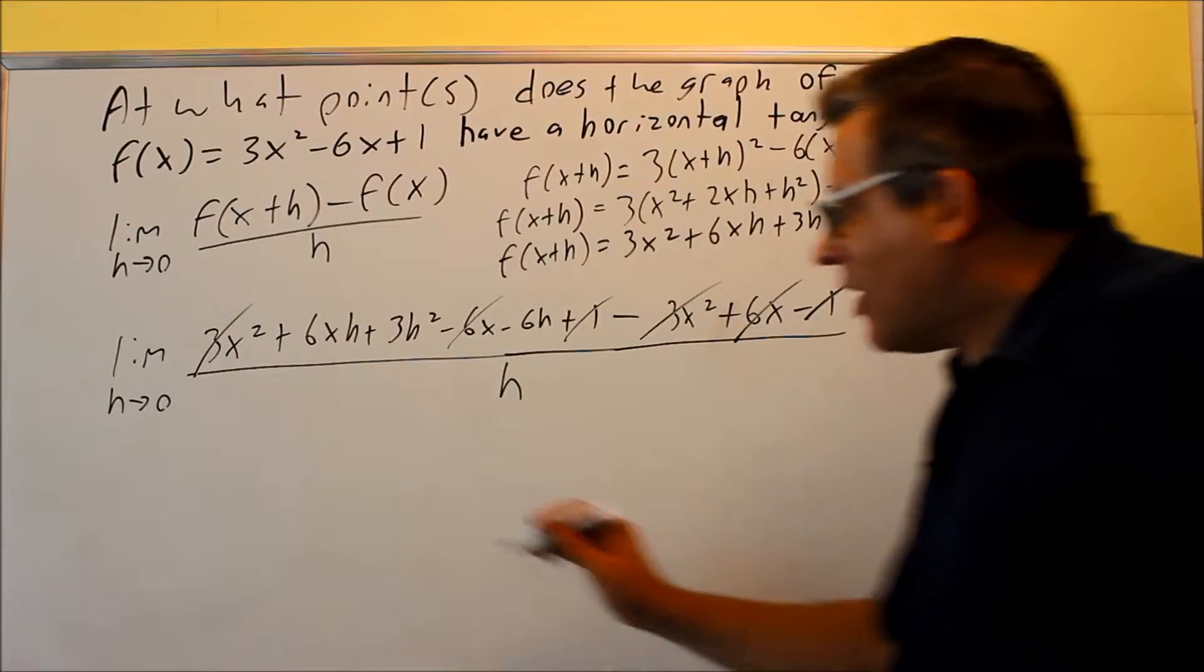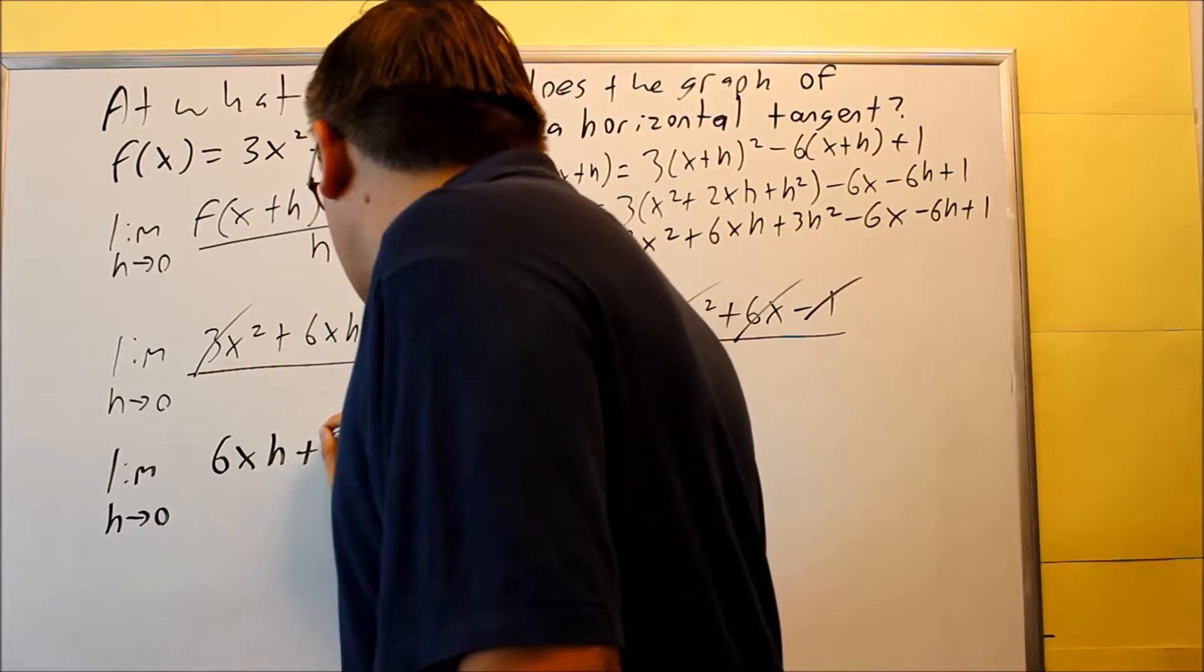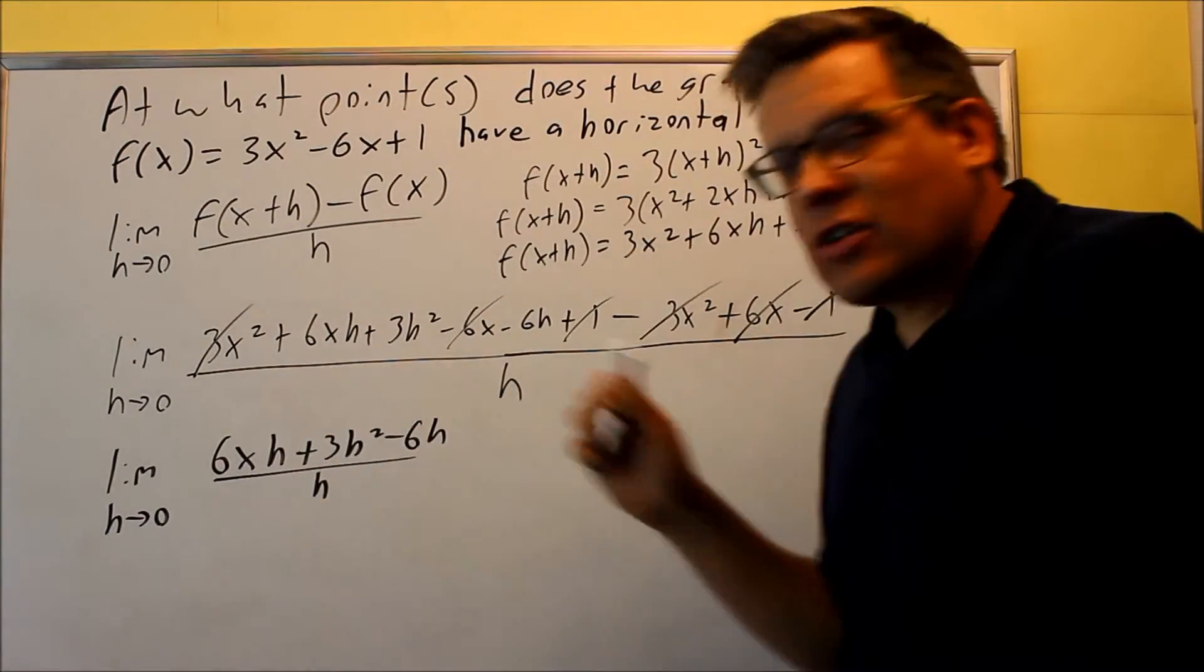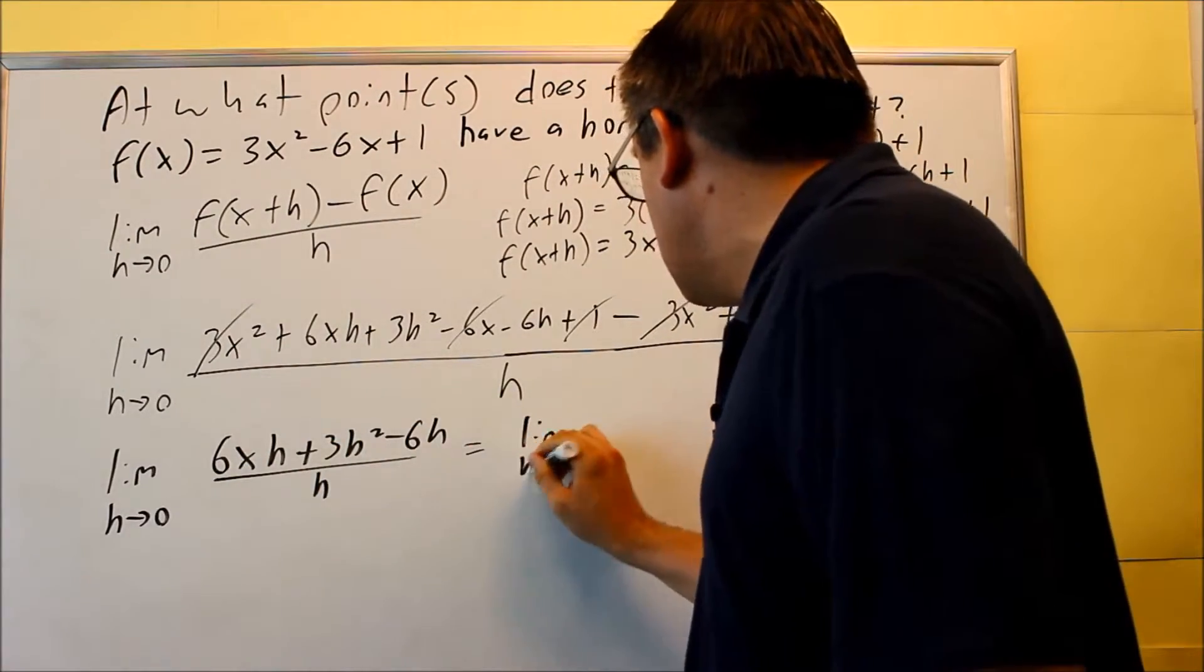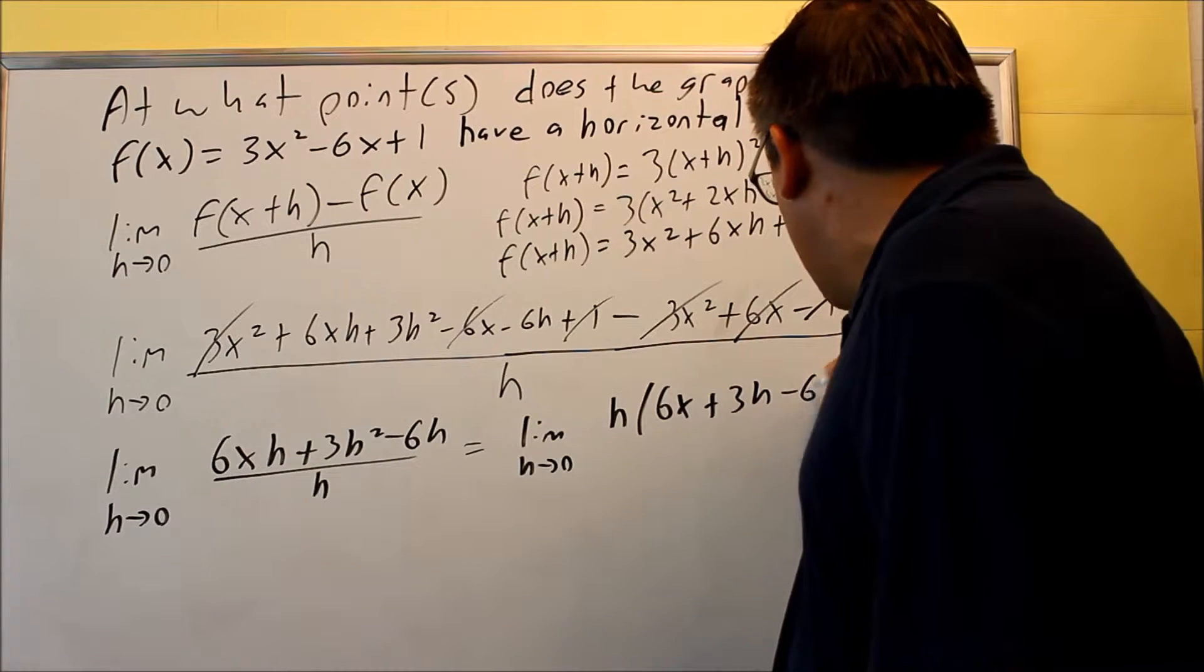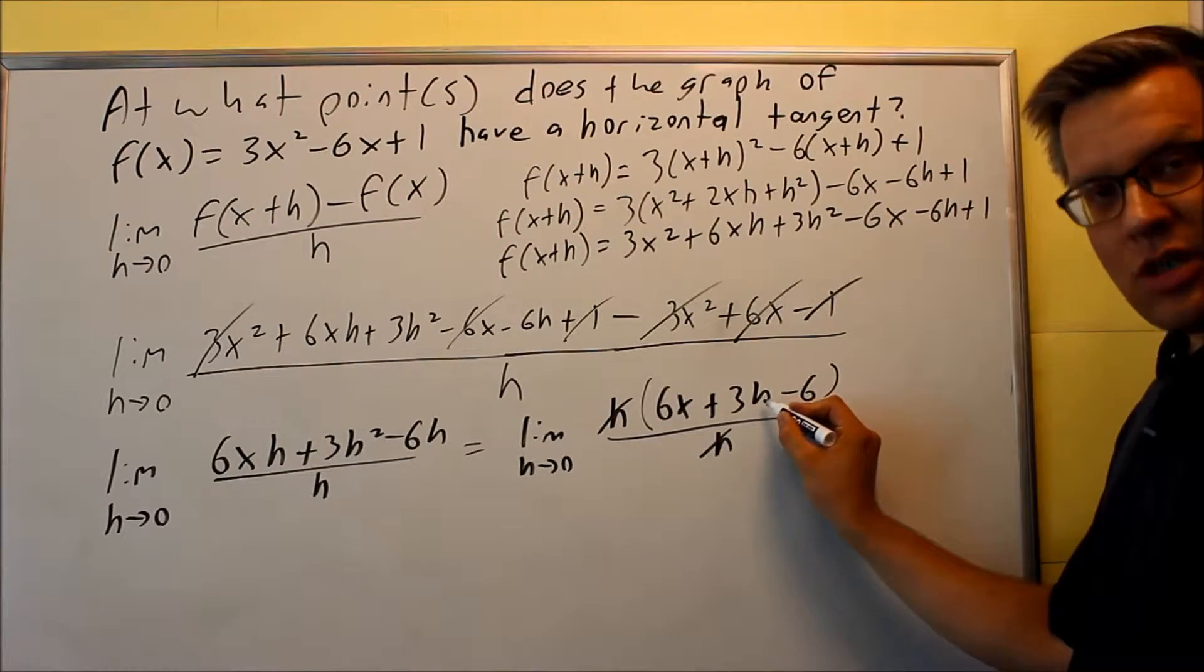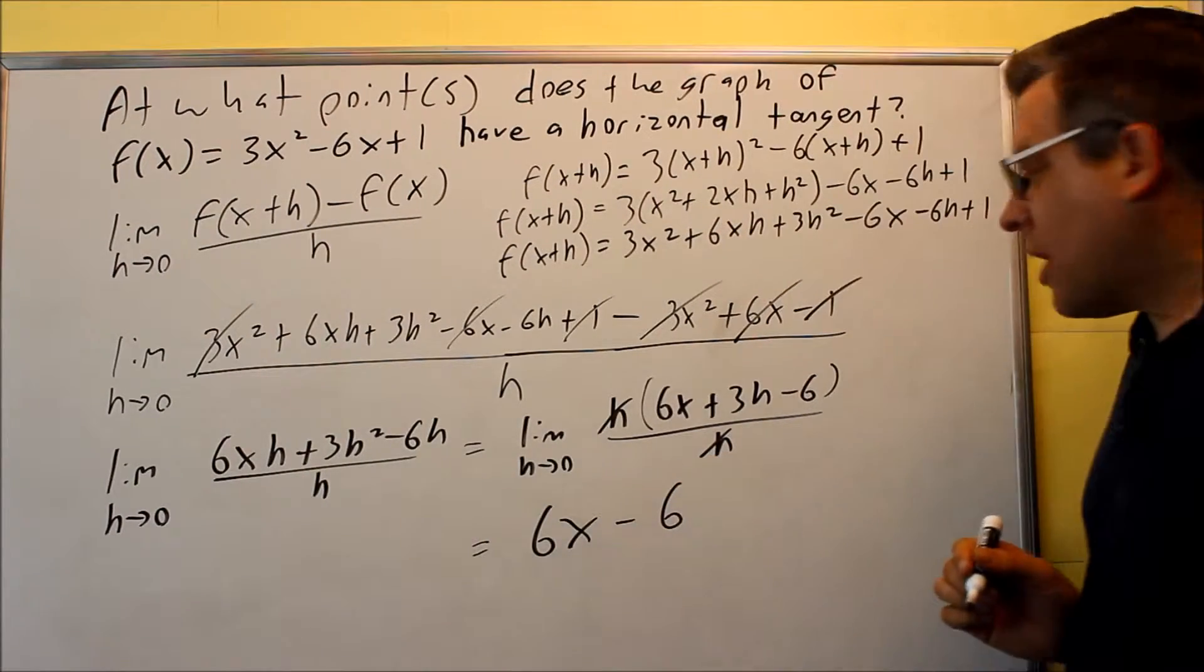What I'm left with is things only that have h in it. So now if I rewrite it, I'm going to get 6xh + 3h² - 6h all over h. Next, what I need to do is factor out an h and cancel it, because I want to find the limit. I don't want to divide by zero. So I'm going to do limit as h goes to 0. h comes out: 6x + 3h - 6. And I'm going to cancel out the h's, and then I'm going to put a 0 into this h right here. And what I'm left with is 6x - 6.